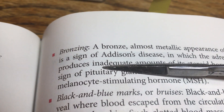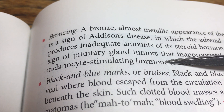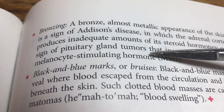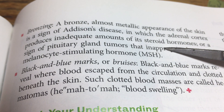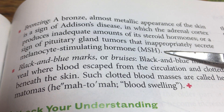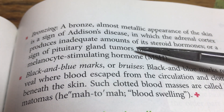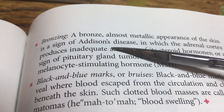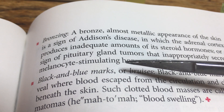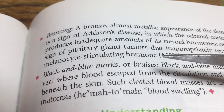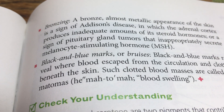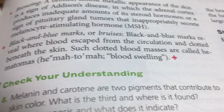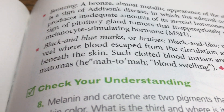Bronzing occurs with underproduction of the steroid hormone cortisol from the adrenal cortex — the official name of this disease is Addison's disease. Bronzing sometimes appears in the forehead and face in response to sunlight, as a consequence of the hormonal imbalance.